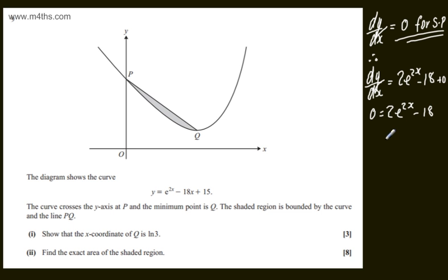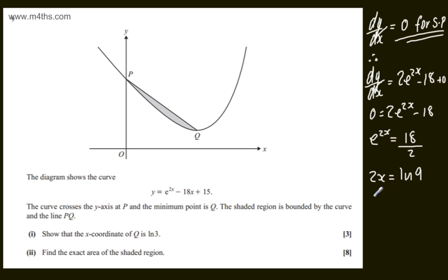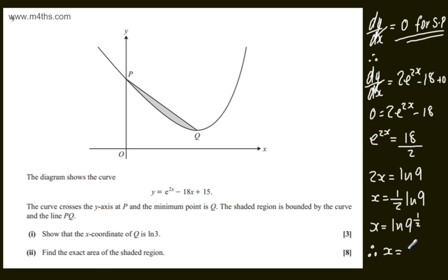Adding 18 to both sides and dividing by 2, we get e to the 2x equals 18 over 2, which is 9. Using the log equivalent, 2x equals the natural log of 9. Dividing both sides by 2, x equals one half the natural log of 9. Raising the power to one half, x equals the natural log of 9 to the one half.